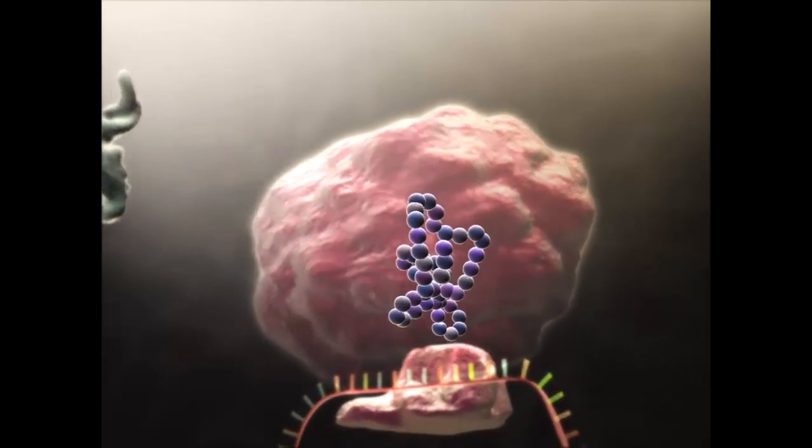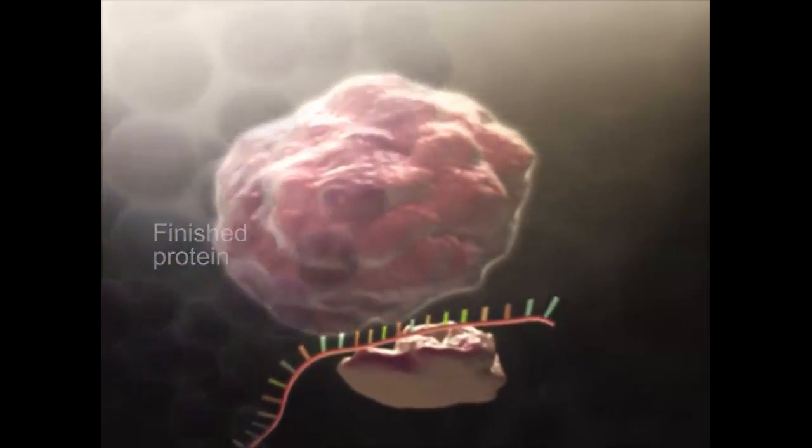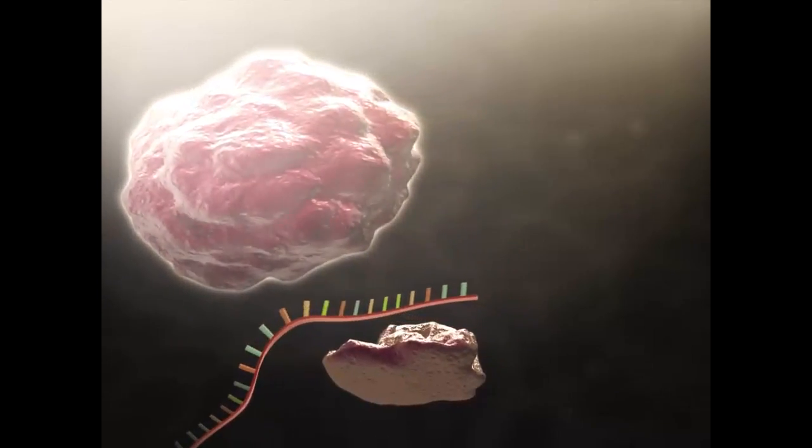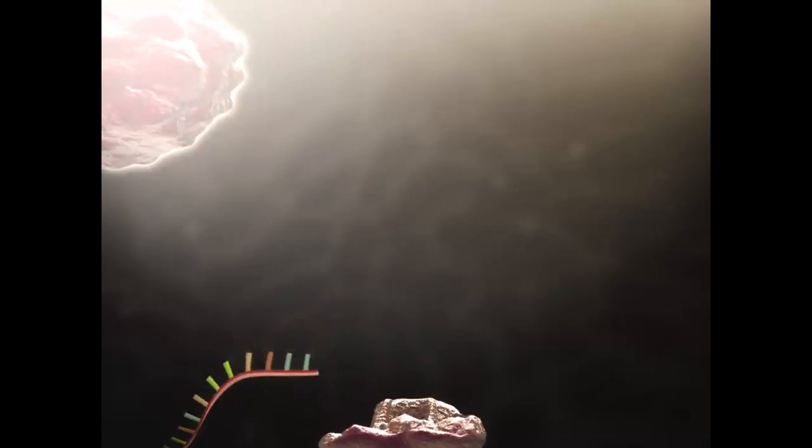The ribosome then releases the finished protein from the tRNA and detaches from the mRNA as the two ribosomal subunits separate. The protein will then be further modified in other cellular structures or directly used by the body.